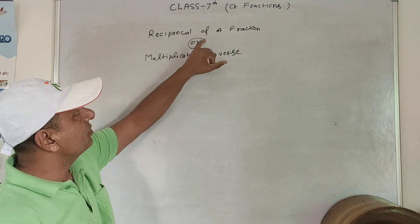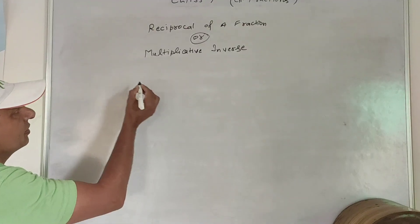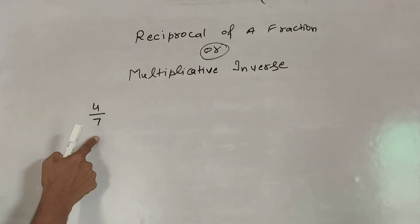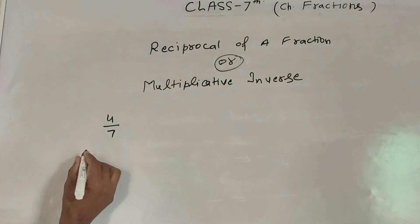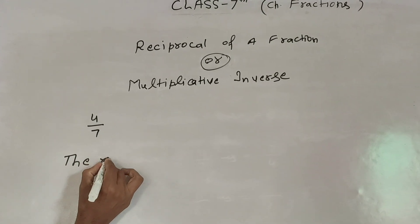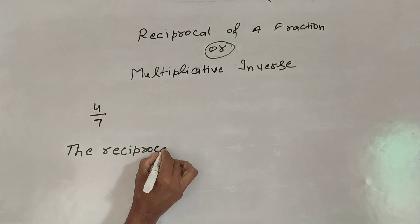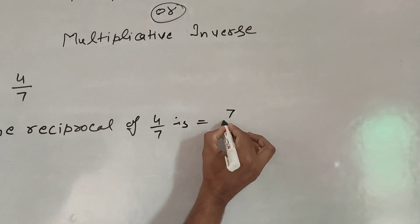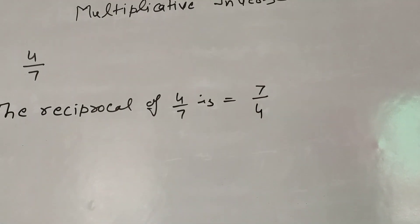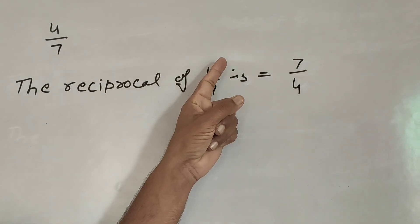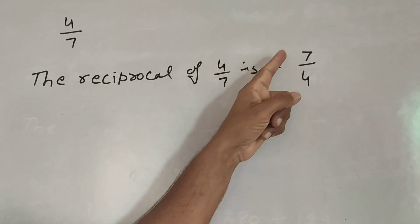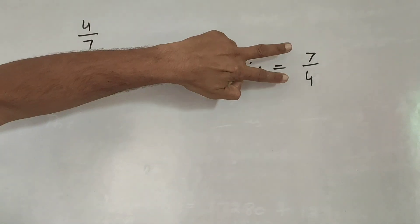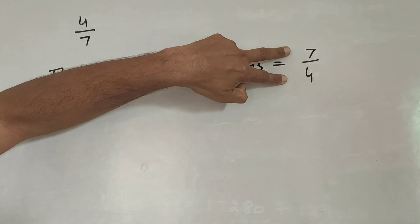We find the reciprocal of a fraction. See one example: here 4 by 7 is a fraction. We want to find the reciprocal. The reciprocal of 4 by 7 is equal to 7 by 4. In reciprocal, we interchange the numerator to denominator and denominator to numerator.